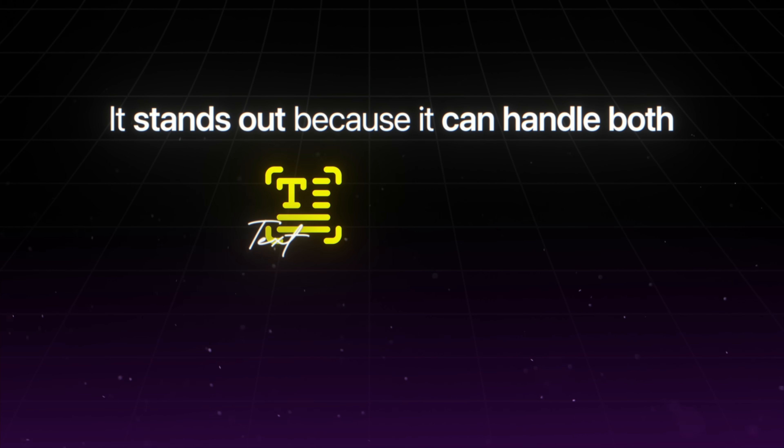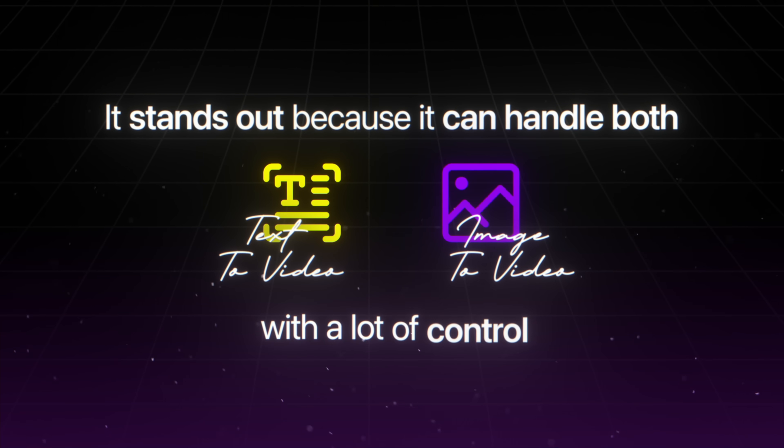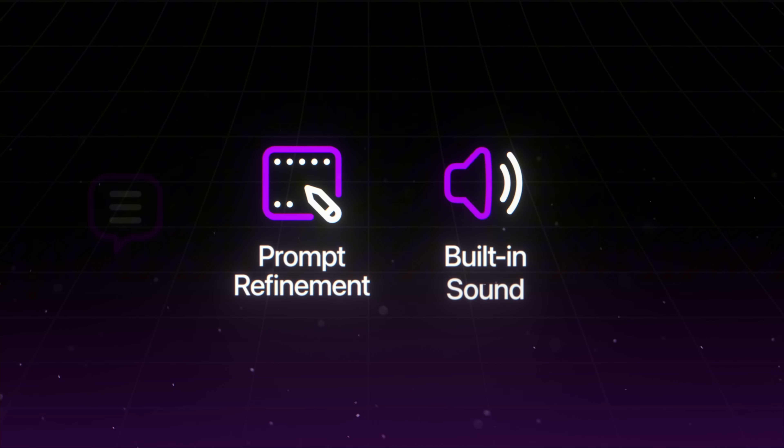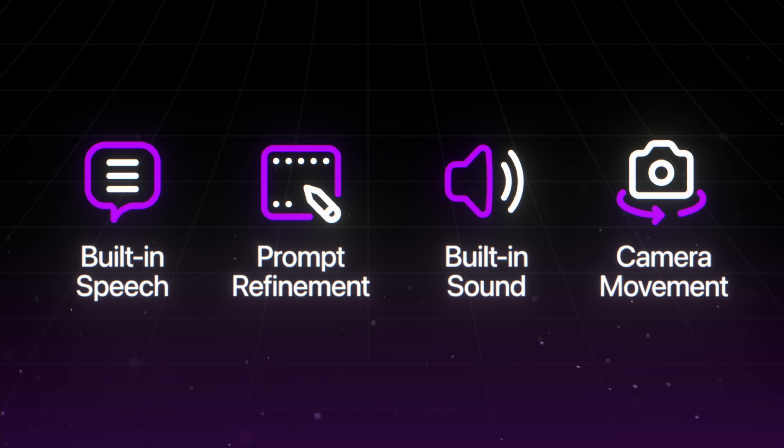Now next up is Kling AI. Kling is one of the more flexible tools out right now when it comes to realistic video generation. It stands out because it can handle both text to video and image to video with a lot of control — things like prompt refinement, built-in sound and speech, and even camera movement simulation. It's especially good for creators who want believable characters, subtle expressions, and smooth motion without needing complex post-production or multiple apps. Here's how I use it.